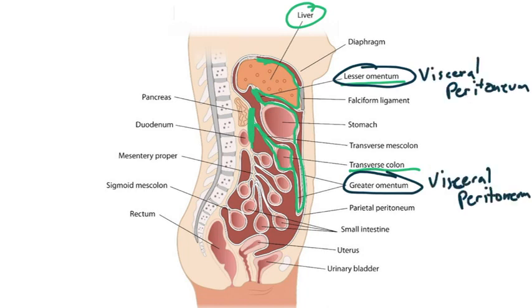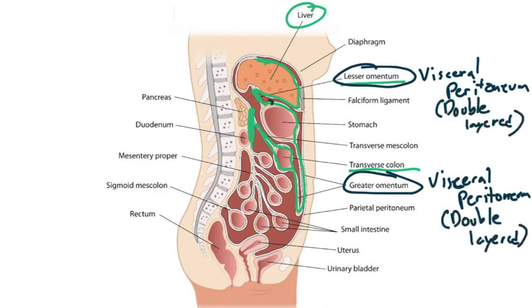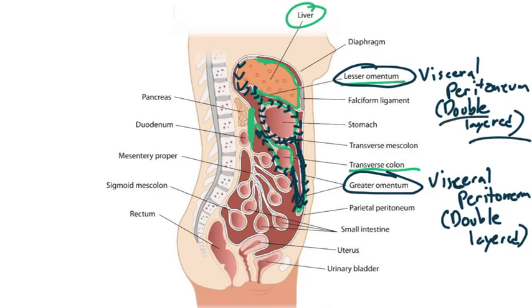More specifically, the lesser and greater omentum are double layers of peritoneum, and that's what makes them omentums. This is a single layer covering the stomach that extends down, and then from the other side it comes down as a single layer until we reach the lesser omentum, which is a double layer. So these omentums are double-layered.